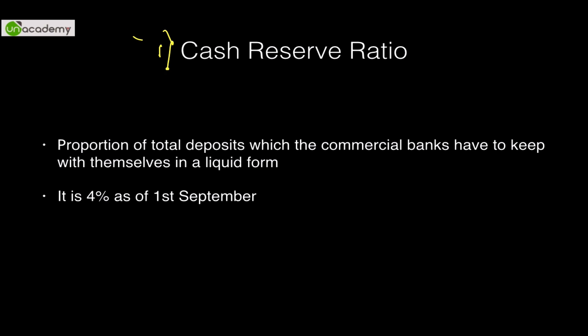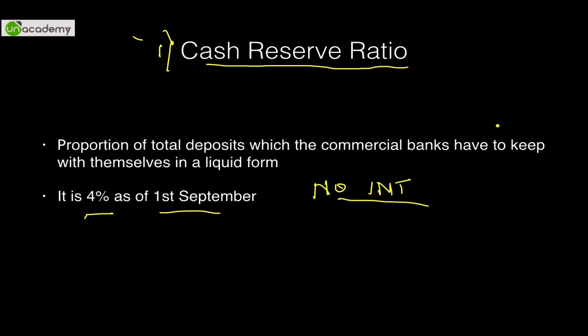The first rate is the Cash Reserve Ratio, or CRR. CRR means the reserve of cash determined by the RBI that commercial banks have to keep with the RBI at the end of every single day. Whatever total deposits are with the commercial banks, they have to keep a certain percentage of those deposits with the RBI in liquid form. It is 4% as of 1st September. Please remember — there is no interest paid on these deposits kept with the RBI. No interest — it is important for Prelims.